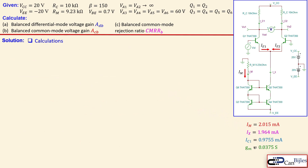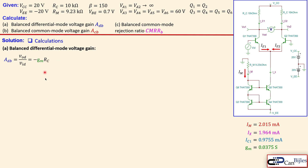Now for question A, the balanced differential mode voltage gain. VOD over VID equals gm times RC minus gm times RC in the small-signal analysis. With gm known and RC given in the circuit, the result is minus 375. The negative sign means an inverted output: applying a positive signal at Q1's base and negative at Q2's base produces an inverted differential output.